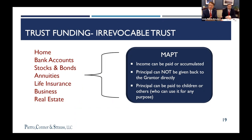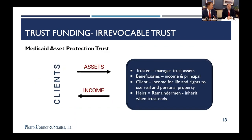We have new Medicaid rules imposing a 30-month or two-and-a-half-year lookback for home care. In the MAPT, you are not wearing all three hats — you appoint someone else as trustee. Most times it's children, but it doesn't have to be. Sometimes it's your CPA, your best friend, an aunt, uncle, or cousin. Generally it's not going to be you because we want to protect these assets and have a measure of a wall between you from a control perspective. The trustee, though, you can remove at any time.